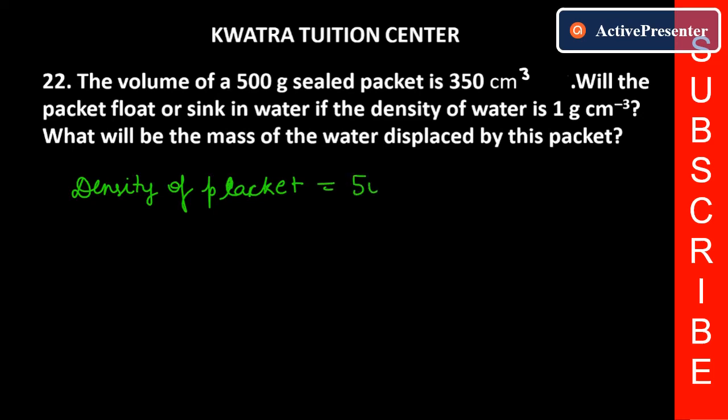So density we know is mass over volume. How much mass? It is 500 and volume is 350. Zeros cancel, then both by 5 cancel. This will be 10 over 7. And if you divide 10 by 7, then it will be 1.428 gram per centimeter cube.